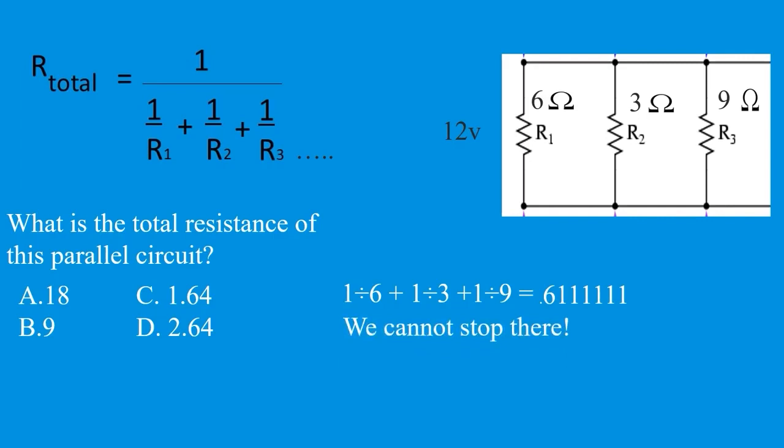We must then take the reciprocal of that number. So we must then divide 1 by that number. So we take 1 and divide it by 0.611111.